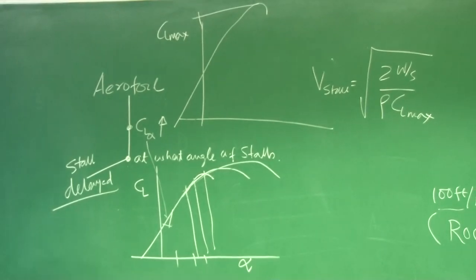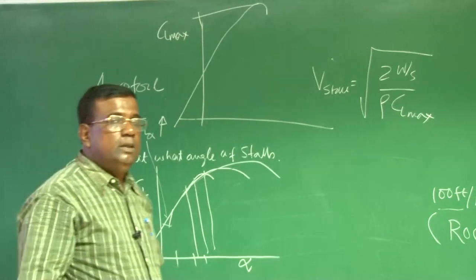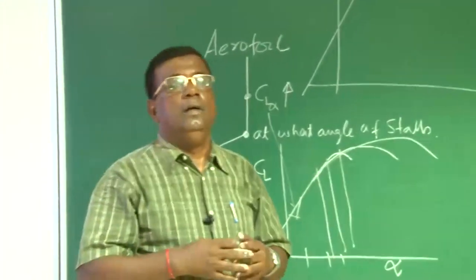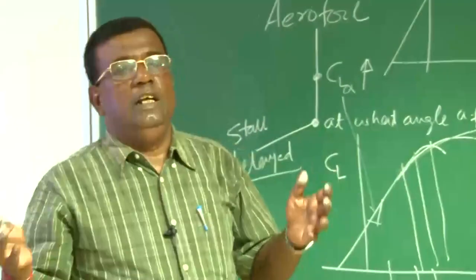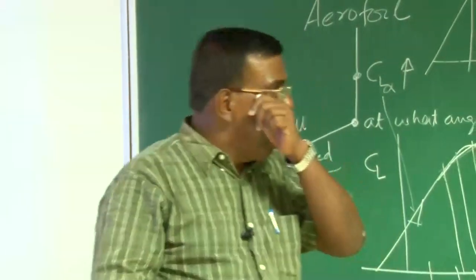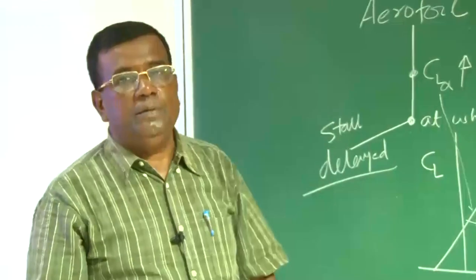But, you have seen, people want to increase it. So, one way is you contour the aerofoil, so that CL max goes up implicitly by because of shape. Second thing is, people use flaps, right?